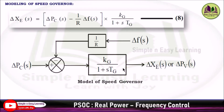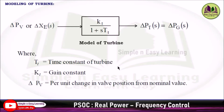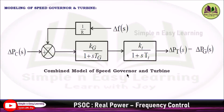Along with the speed governor model, we discuss the turbine model. The turbine is represented by a single block Kt/(1 + s·Tt), where the input is del_Xc(s) and the output is del_Pt(s), the turbine output. Here Tt is the time constant of the turbine, Kt is the gain constant of the turbine, and del_Pv is the per-unit change in valve position from nominal value.